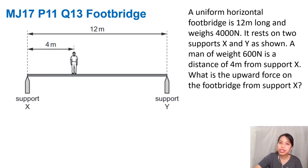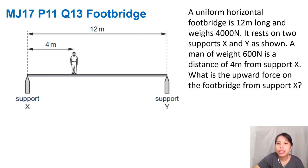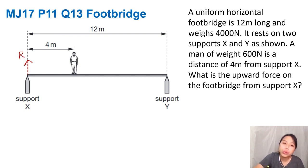What is the footbridge? A uniform horizontal footbridge, 12 meters long and weighing 4000 newtons, is resting on two supports. A man is standing on it and we're asked: what is the upward force from support X? That would be a normal reaction force, and we're trying to find what that is.